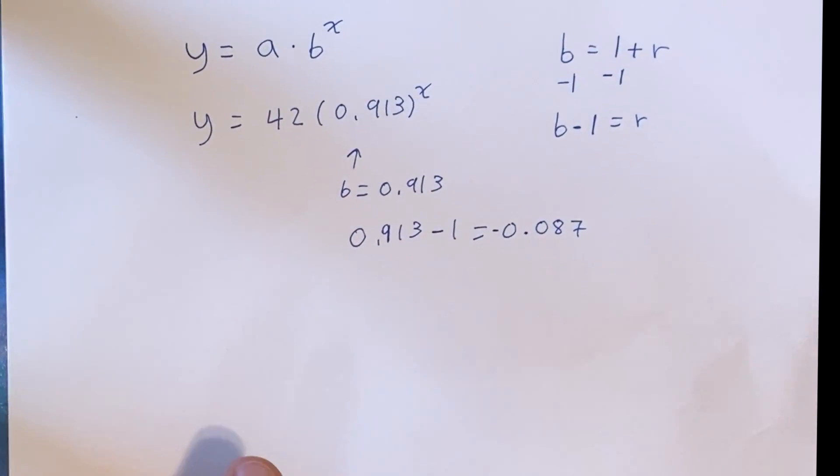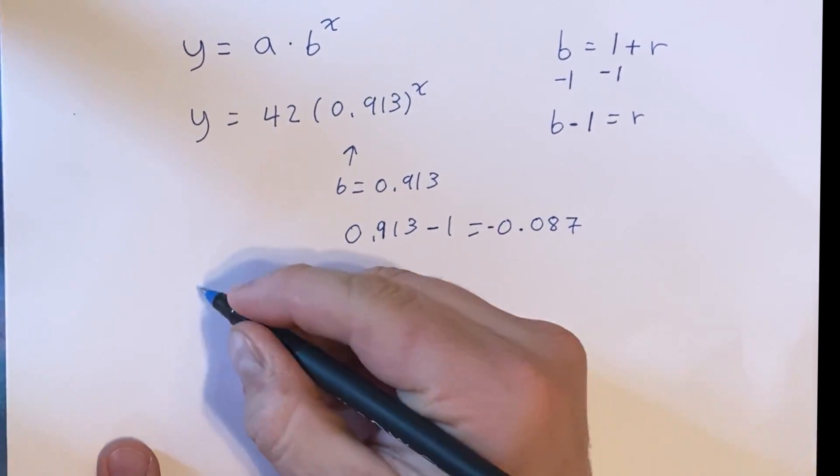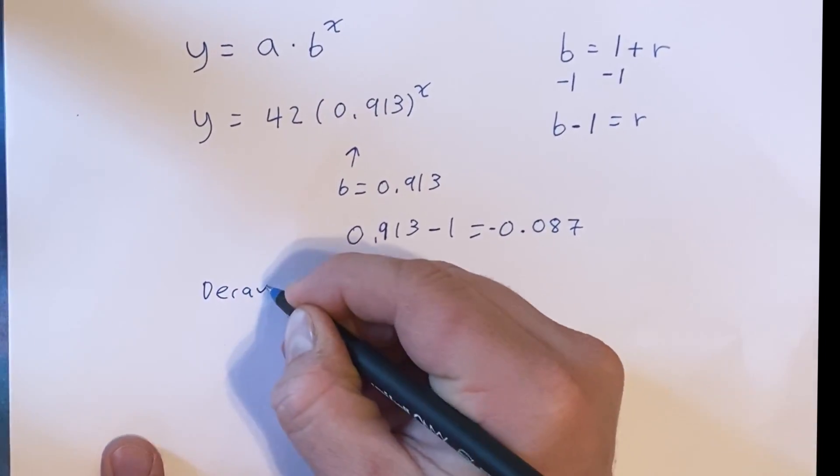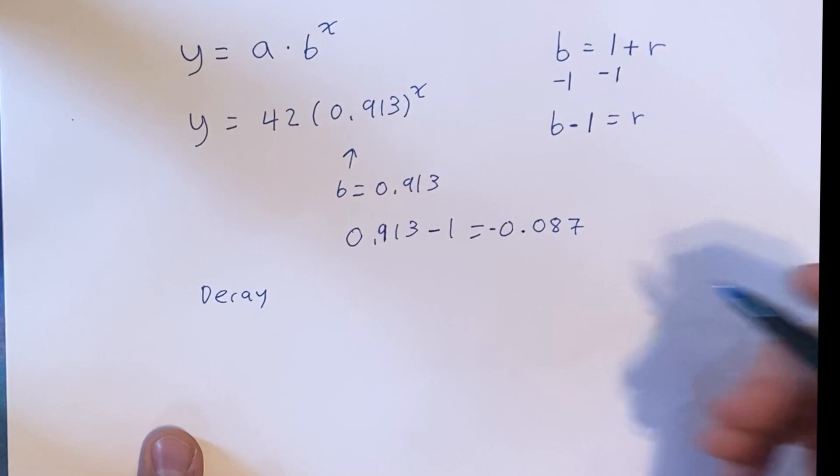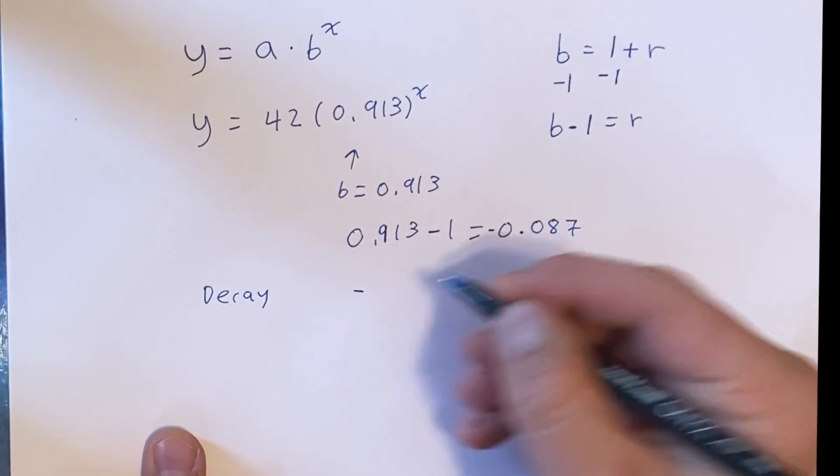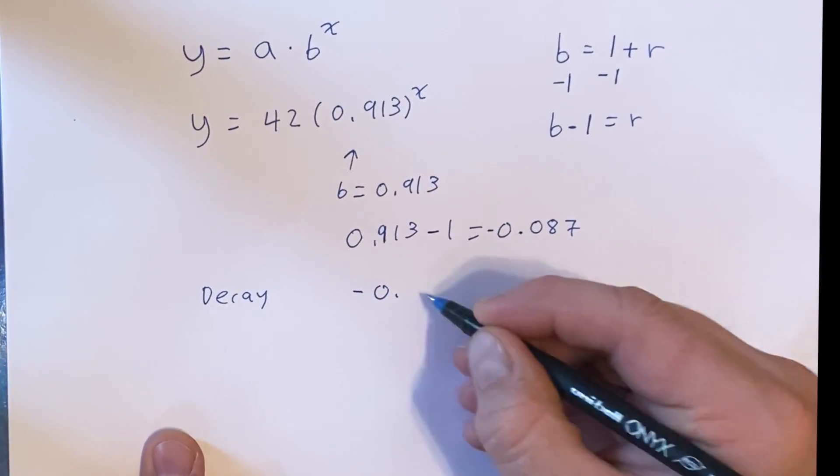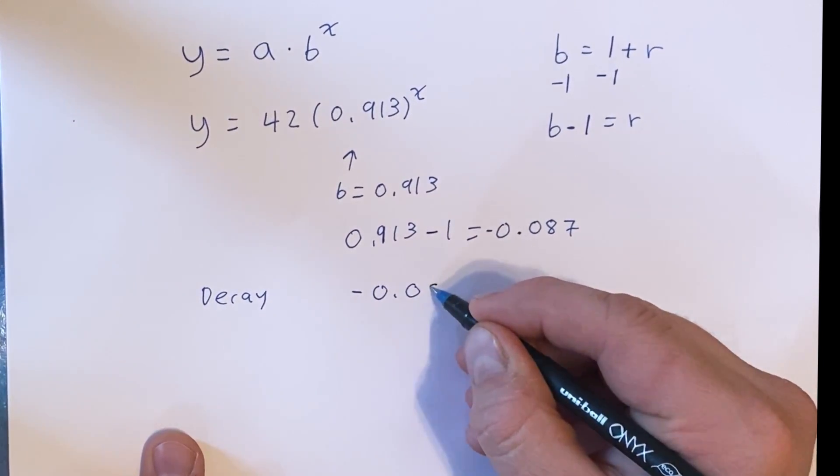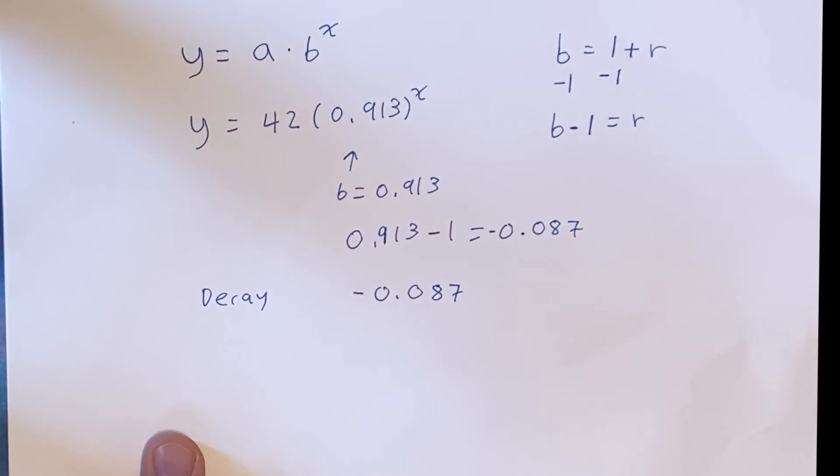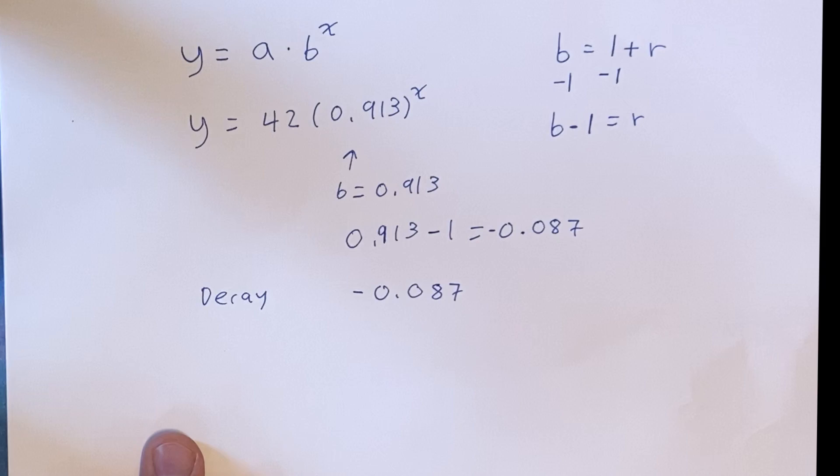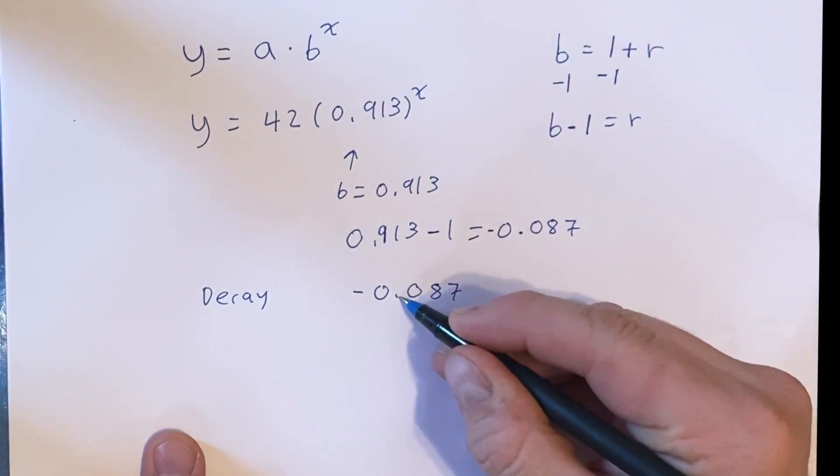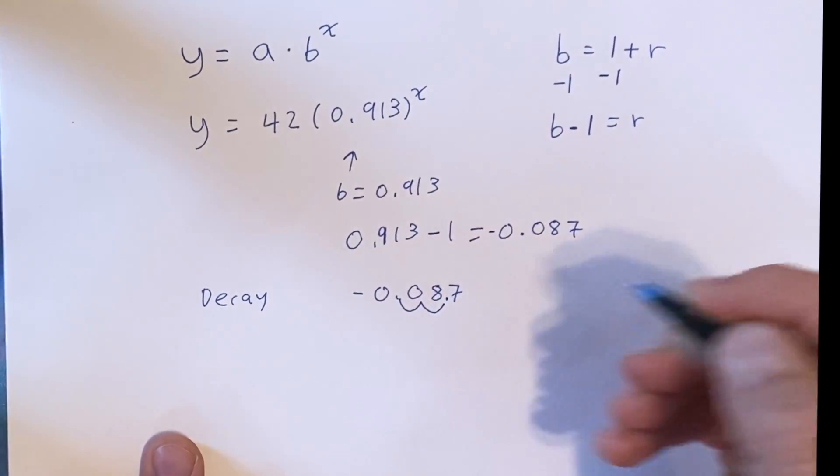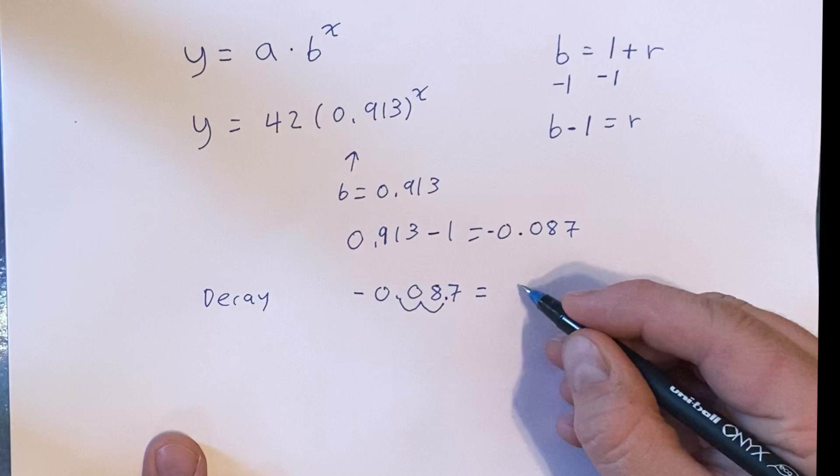The next thing we have to do on DeltaMath is simply select decay. And we also need to write this as a percentage. To write this as a percentage, we're just going to take that number and move the decimal place two places. Basically, we just multiply by 100.